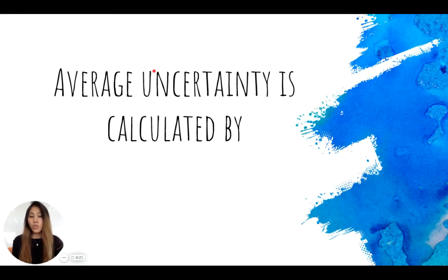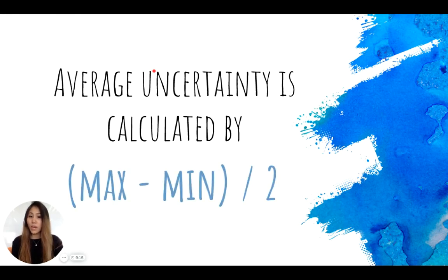The average uncertainty calculation follows the formula of maximum minus minimum divided by 2. Let's take a look at an example.